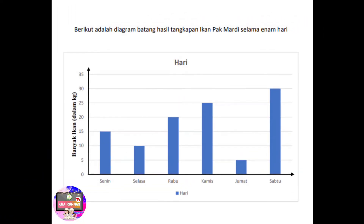Berikut adalah diagram batang hasil tangkapan ikan Pak Mardi selama 6 hari. Pada diagram batang tersebut, terdiri dari garis horizontal yang menunjukkan hari dan garis vertikal yang menunjukkan banyak ikan. Ketika kita akan menafsirkan data dalam bentuk diagram batang, perhatikan terlebih dahulu garis horizontalnya atau garis yang mendatar. Setelah itu, perhatikan garis vertikalnya atau garis yang tegak. Kemudian, kita lihat tinggi batangnya menunjukkan ke angka berapa.